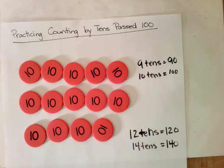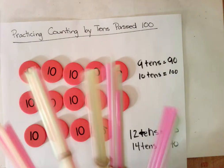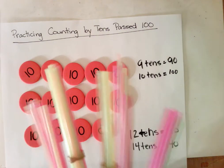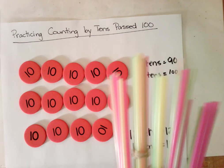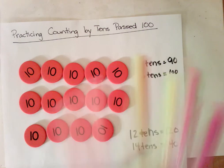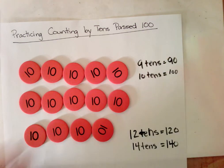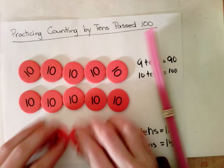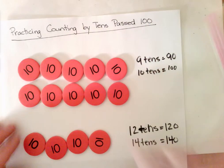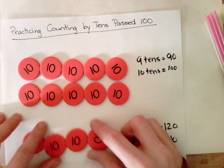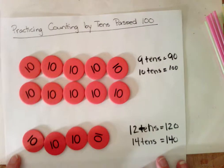Again, if you need something more concrete, you could use something like straws bundled or toothpicks bundled into 10s so that you can see. We'll also keep our group of 10 a little bit separated so that it's easier to continue counting.